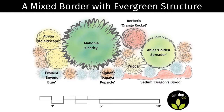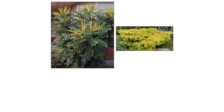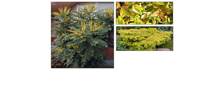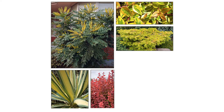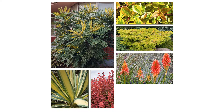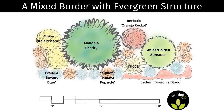It's a vignette anchored by Mahonia 'Charity' with its all-season structure, rounded out by other evergreens like a golden dwarf conifer called Abies 'Golden Spreader' and a pair of colorful Abelia 'Kaleidoscope.' There's a yucca contributing that ever-important bold strappy foliage, Berberis 'Orange Rocket' with fantastic foliage for three seasons, and summer blooms from Kniphofia 'Popsicle' embraced by a ground cover of blue fescue and Sedum 'Dragon's Blood.' These ready-made plans work for a customer's DIY project or for adapting to your own project's dimensions if you're a designer.